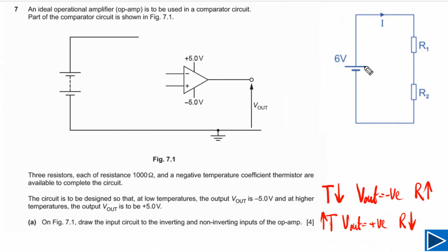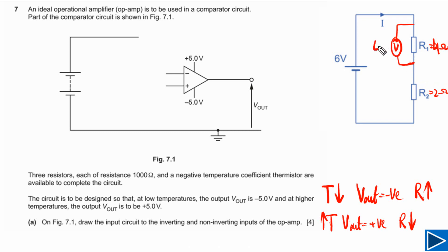Let me explain a little about the potential divider. We have a potential divider circuit with two resistors connected in series. Let's say the resistance of the first resistor is 4 ohms and the second is 2 ohms. If we connect a voltmeter across resistor 1, the reading will be 4 volts because its resistance is double that of the second. If we connect the voltmeter across the second resistor, the reading will be 2 volts.